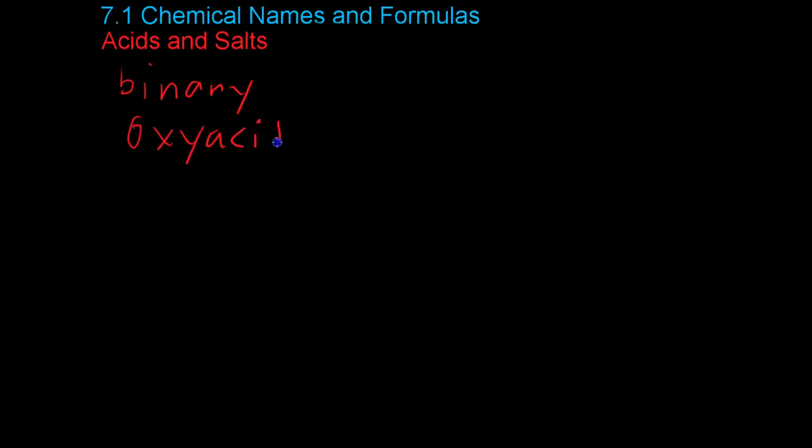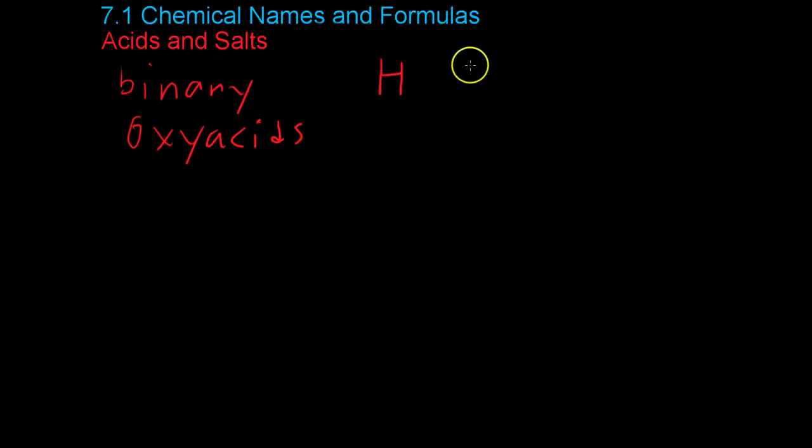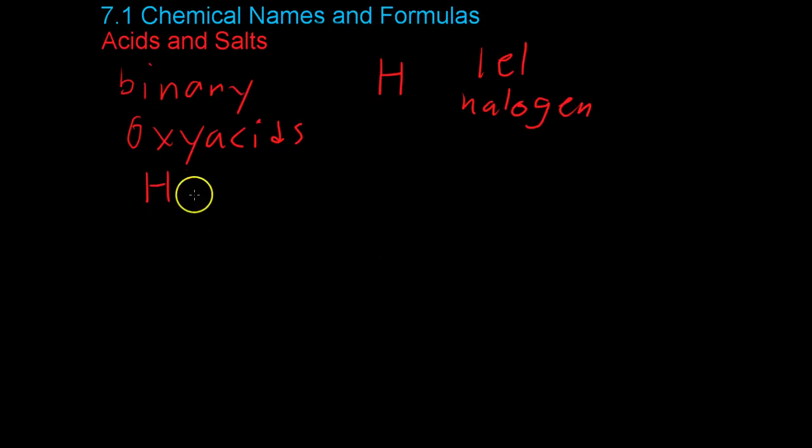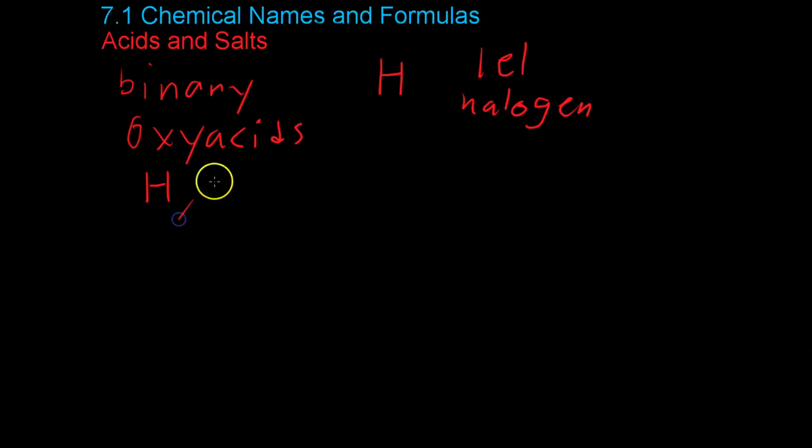Now, binary acids are composed of hydrogen and one other element, usually a halogen. Now, oxyacids on the other hand are also composed of hydrogen, as you'll find out later, is a main component of acids. However, they also contain oxygen and one or more non-metals.